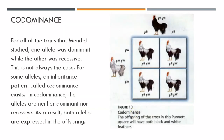Codominance: for all of the traits that Mendel studied, one allele was dominant while the other was recessive, but this is not always the case. For some alleles, an inheritance pattern called codominance exists. In codominance, the alleles are neither dominant nor recessive; as a result, both alleles are expressed in the offspring. For example, if you have a black rooster and a white hen and they present codominance, their offspring will have both traits.